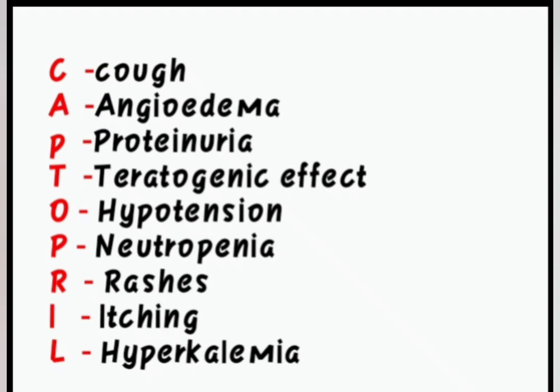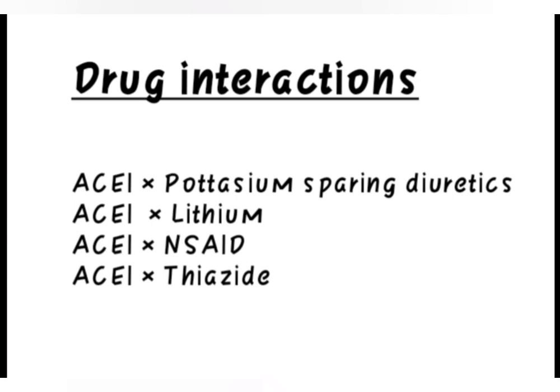Hyperkalemia may occur in the presence of renal insufficiency or when ACE inhibitors are combined with potassium-sparing diuretics. ACE inhibitors are contraindicated in patients with bilateral renal artery stenosis, as acute renal failure can be precipitated. Lastly, let us check the drug interactions.